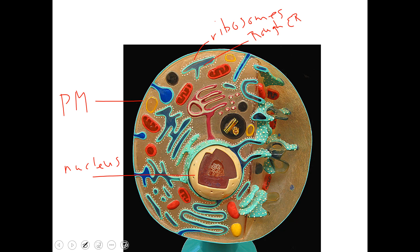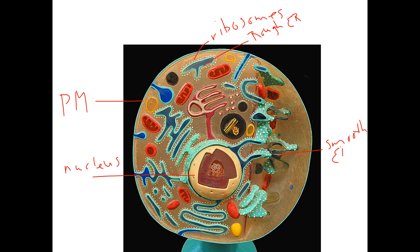One thing that stinks about this model is it doesn't really show smooth ER properly. Smooth ER is not flat like rough ER — it's more tubular and doesn't have ribosomes on the surface. The part on this model without ribosomes on the surface is what I'm going to label as smooth ER. It helps with making lipids and in some cells stores calcium, doing slightly different things in different types of cells.